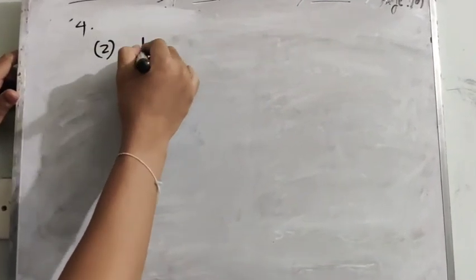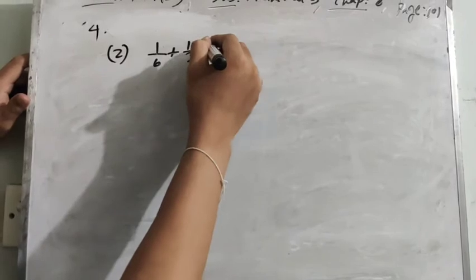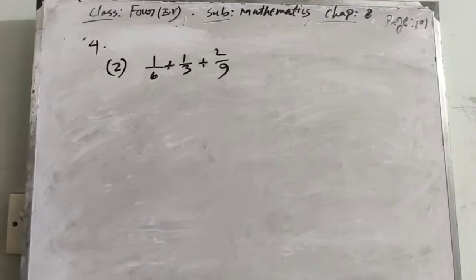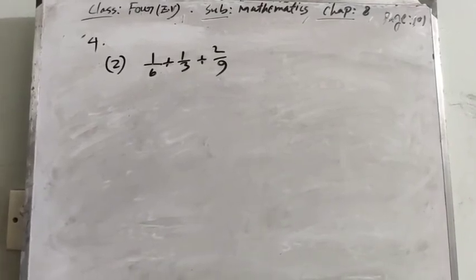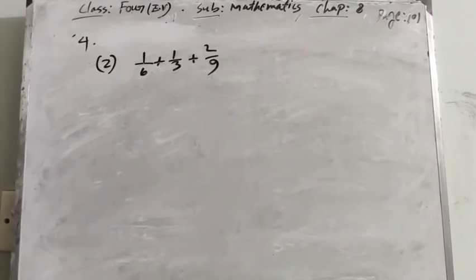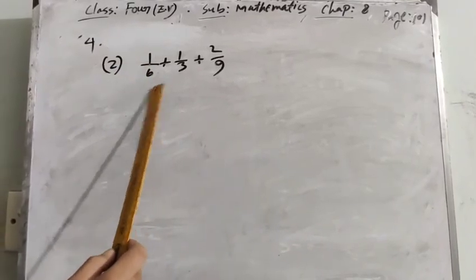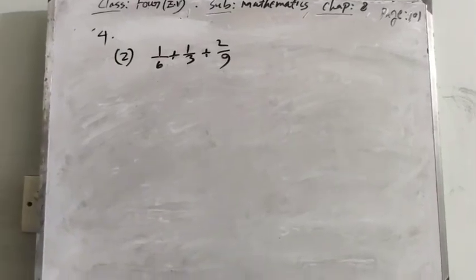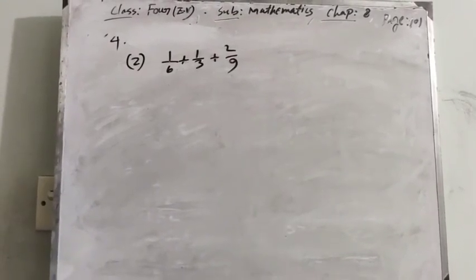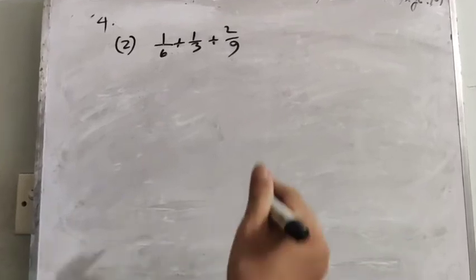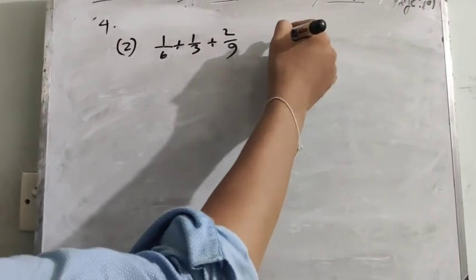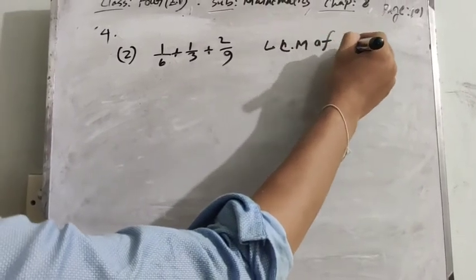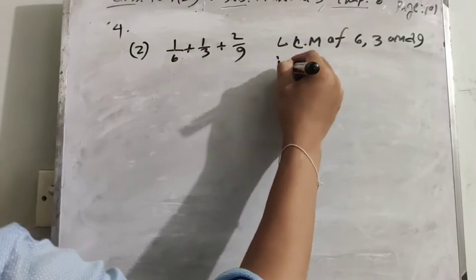Page number 101, question 4, number 2: 1/6 plus 1/3 plus 2/9. We have to find the addition of these 3 fractions. First of all, we have to find the LCM of 6, 3, and 9. The LCM of 6, 3, and 9 is 18.